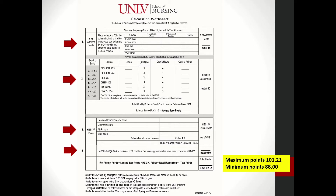The total possible score is 101.21, while the minimum number of points needed to apply is 88. While you can apply with one of the calculation worksheet courses in progress, you will not receive points for it. The course needs to be completed in order to receive points on the calculation worksheet.